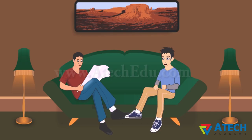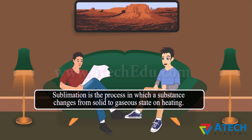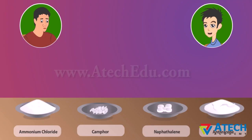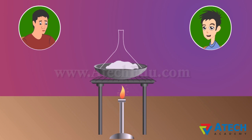Dad, I learned about the sublimation process — where do we use it? Sublimation is the process in which a substance changes from solid to gaseous state on heating. It is used to separate a mixture containing a sublimable volatile component and a non-sublimable impurity. Examples of solids which sublime include ammonium chloride, camphor, naphthalene, and anthracene. When a mixture of ammonium chloride and salt is heated in a china dish, ammonium chloride evaporates and solidifies, separating from the mixture.